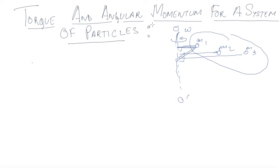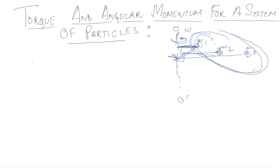The angular momentum for a system of particles: say these particles are rotating about a fixed axis. If you want to find the angular momentum of this whole system, the total angular momentum of a system of particles about a given point is found by adding vectorially the angular momentum of individual particles. So we need to find the vectorial sum of the individual angular momentum of each object of mass m1, m2, and m3.